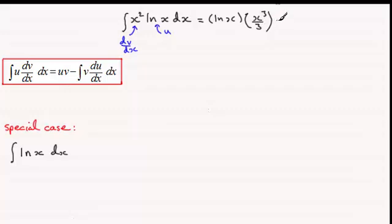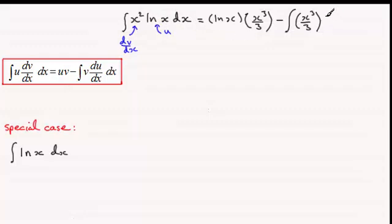And then it's minus the integral of v, which was x cubed over 3, multiplied by the differential of u. Now if we differentiate natural log of x with respect to x, that's going to be 1 over x. And then we integrate that all with respect to x.